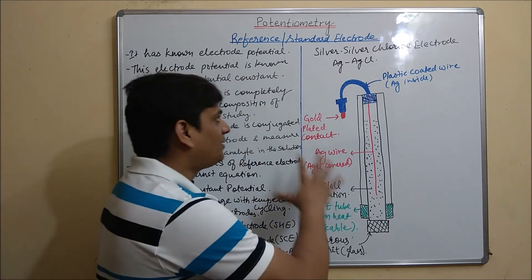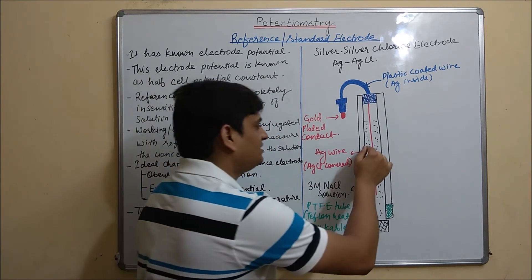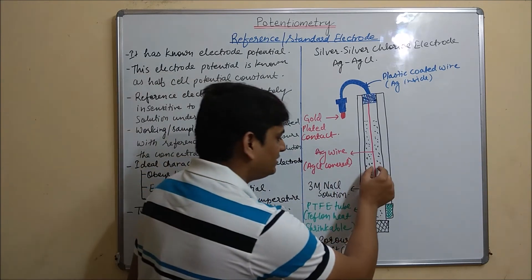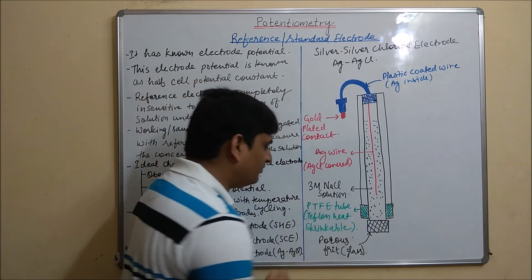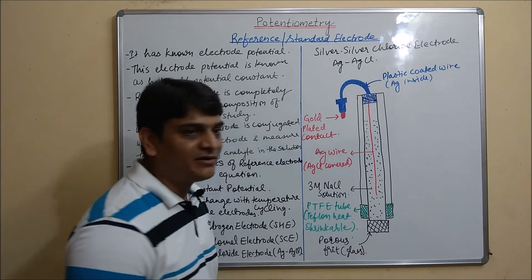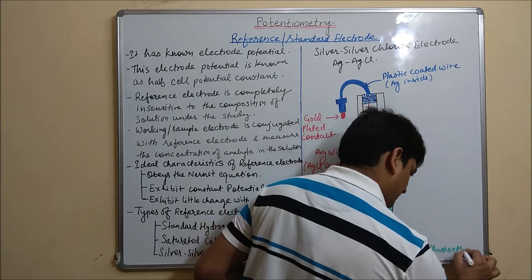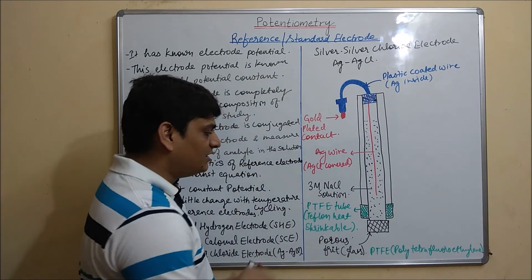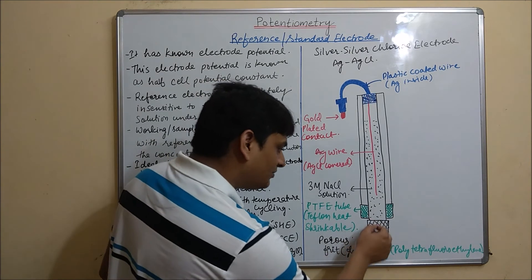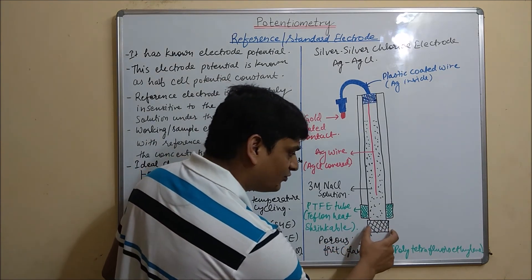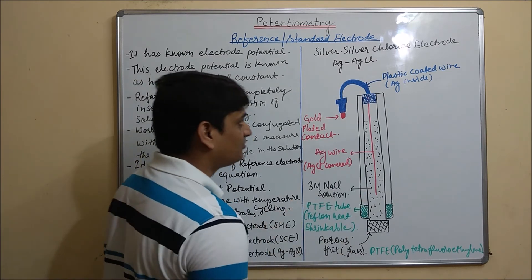This is the block diagram of the silver-silver chloride electrode. Here, one silver (Ag) wire is present, and this Ag wire is coated with AgCl. A 3 molar NaCl solution is filled in this electrode, and PTFE tubing is used. PTFE stands for polytetrafluoroethylene, also known as Teflon. The Teflon tubing is shrinkable with heat and is attached with a porous frit, that is porous glass, for dipping in the electrolyte solution. This is the complete setup of the silver-silver chloride electrode.